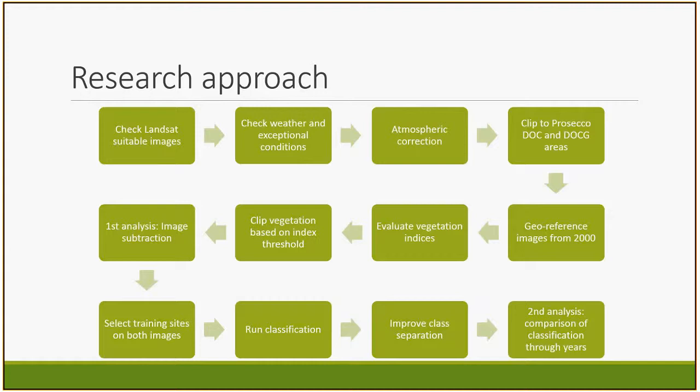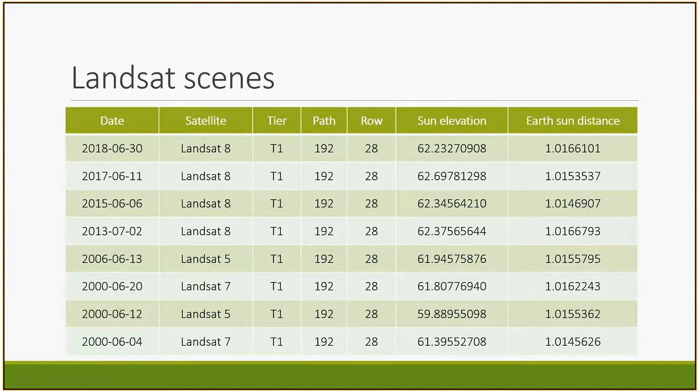In this chart we see the growing demand of Prosecco through the years, which led to a proportional expansion of the vineyards necessary to produce the wine. This is a land conversion phenomenon bringing those areas towards a monoculture. In this study I will investigate a remote sensing approach for vineyard registration and a measure of land conversion in the Prosecco DOC and DOCG areas between 2000 and 2018.